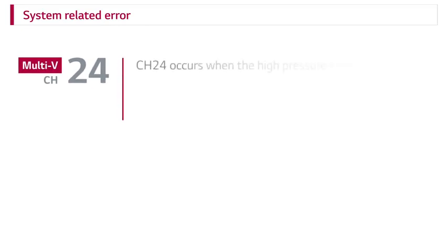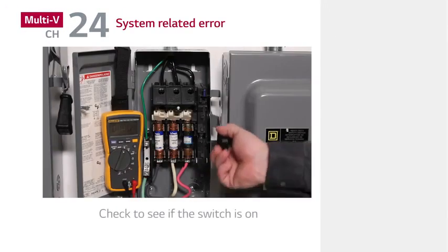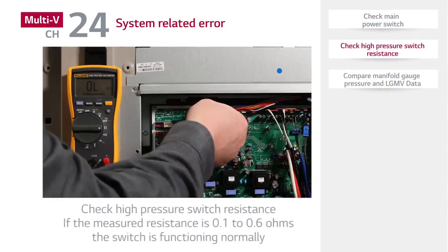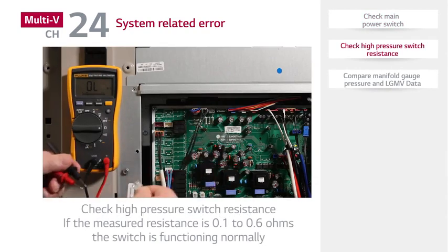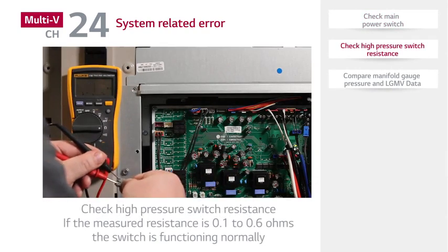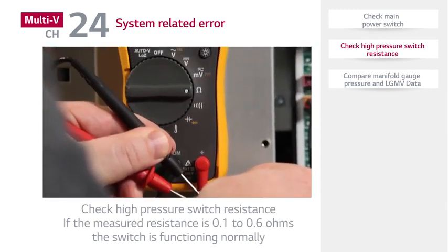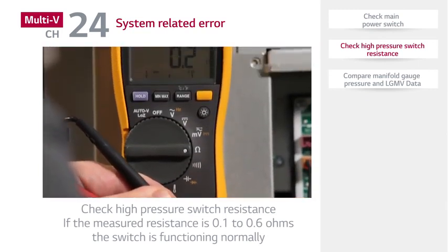A CH-24 error indicates the high-pressure switch is opened. First, check the power. Next, check the high-pressure switch resistance. If the measured resistance is 0.1 to 0.6 ohms, the switch is functioning normally.